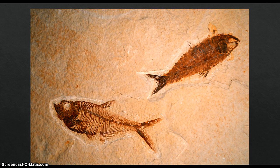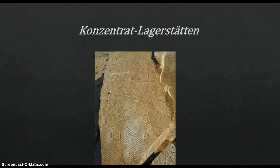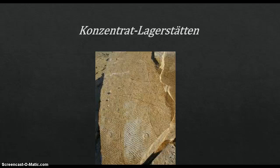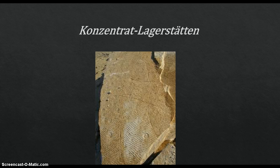There are two types of Lagerstätten. The first is Konzentrat-Lagerstätten, or Concentration Lagerstätten. They are deposits with a particular concentration of disarticulated organic hard parts, such as a bone bed. These Lagerstätten are less spectacular than the more famous Conservat Lagerstätten. Their contents invariably display a large degree of time averaging, as the accumulation of bones in the absence of other sediment takes some time. Deposits with high concentrations of fossils that represent a community, such as reefs or oyster beds, are not considered Lagerstätten.